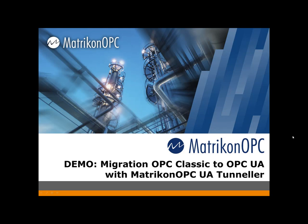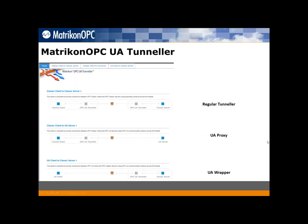During the presentation I'm going to use the Matrikon OPC UA Tunneler. This is the configuration screen of the software. The tunneler has the functionality previously known as Matrikon Tunneler, where you can communicate an OPC classic server located in one computer with an OPC classic client in a different computer — even across a network with a firewall in the middle. The communication between the two PCs uses a TCP/IP port.